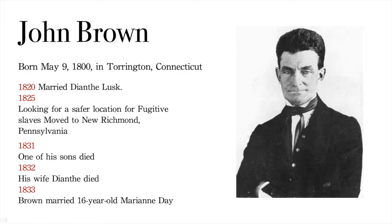In the summer of 1832, after the death of a newborn son, his wife also died, leaving him with children John Jr., Jason, Owen, and Ruth. The other three of their children did not survive to adulthood. On June 14, 1833, Brown married 16-year-old Mary Ann Day, originally from Washington County, New York. They eventually had 13 children. Among those who died young were Simon, Annie, Sarah, and Ellen.